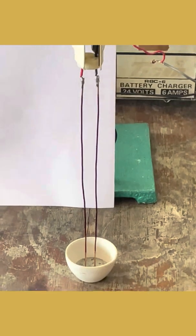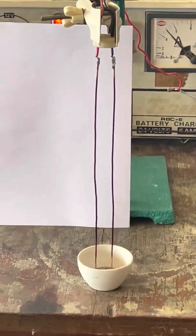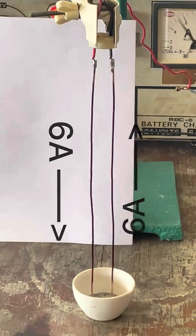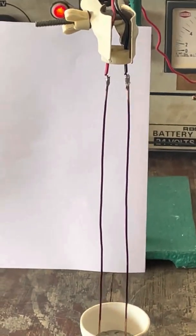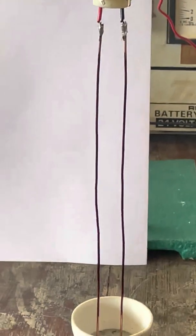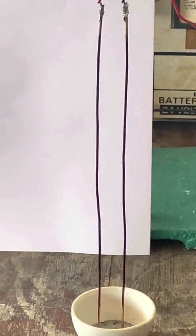In this setup, the two wires are in series combination. When the power is switched on, 6 amperes current flows through each of the wires but in opposite directions. Unlike parallel currents repel.